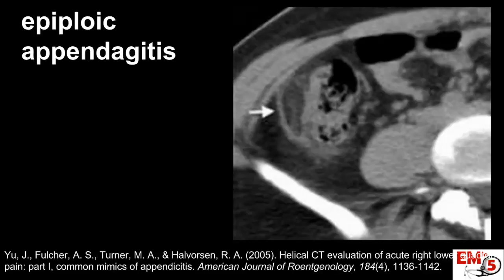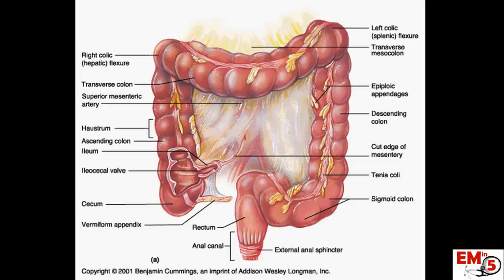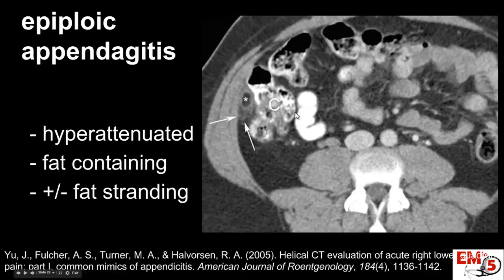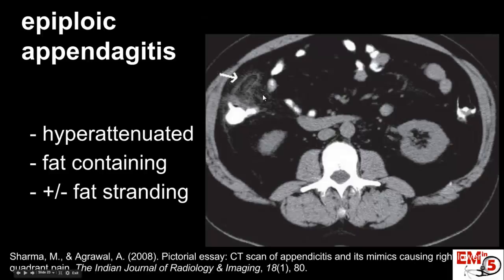An epiploic appendage consists of little fat appendages that can be anywhere on the colon. You can imagine that if any of these appendages on the right side get twisted or infarcted, it can cause a lot of pain and mimic appendicitis. The good thing is it's a benign problem that will resolve on its own — this patient does not need surgery. On imaging you'll see a hyper-attenuated appendage with fat stranding surrounding it. The key is that it's fat-containing — there's fat inside, not fluid or pus. Here are more examples: an enhanced rim with fat stranding, but fat inside it.